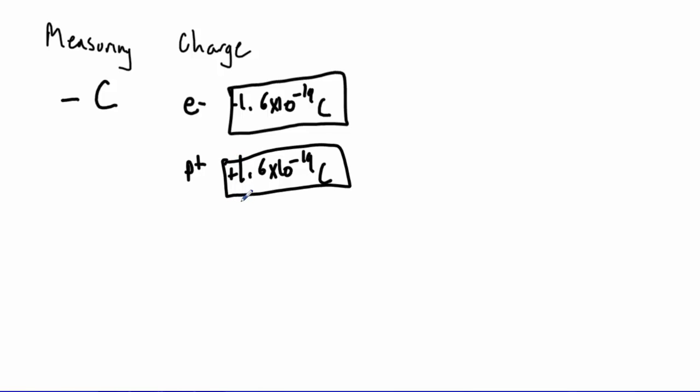So those are the two charges that, those are the fundamental charges, electrons and protons. So it turns out charge is discrete, it's not continuous, they come in steps.